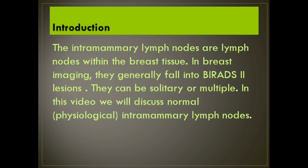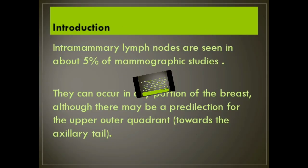In this video we will discuss normal, physiological intramammary lymph nodes. Intramammary lymph nodes are seen in about 5% of mammographic studies. They can occur in any portion of the breast, although there may be a predilection for the upper outer quadrant, towards the axillary tail.